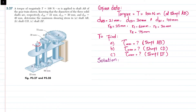Welcome back. Problem 3.27: a torque of magnitude T equal to 100 newton meter is applied to shaft AB of the gear train shown. Knowing that the diameters of three solid shafts are: d_AB = 21 mm, d_CD = 30 mm, and d_EF = 40 mm, determine the maximum shearing stress in shaft AB, in shaft CD, and in shaft EF.